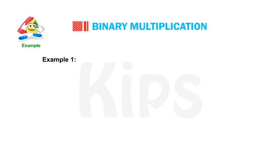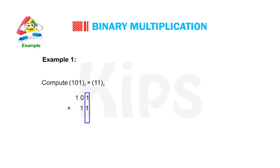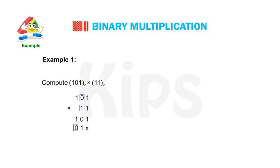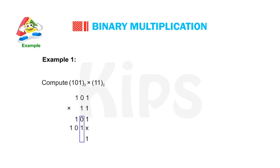Example 1: Compute binary 101 multiplied by binary 11. 1 × 1 = 1; 1 × 0 = 0; 1 × 1 = 1. For the second partial product: 1 × 1 = 1; 1 × 0 = 0; 1 × 1 = 1. Adding the partial products: 1 + 0 = 1; 0 + 1 = 1; 1 + 0 = 1; and 1 — giving a final result of 1111.